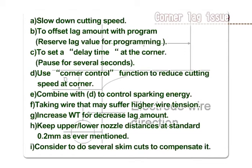E. Combine with D to control sparking energy. F. Account for wire lag by applying higher wire tension. G. Increase wire tension to decrease lag amount. H. Keep upper and lower nozzle distance at the standard 0.2 mm as previously mentioned. I. Consider performing several skim cuts to compensate.